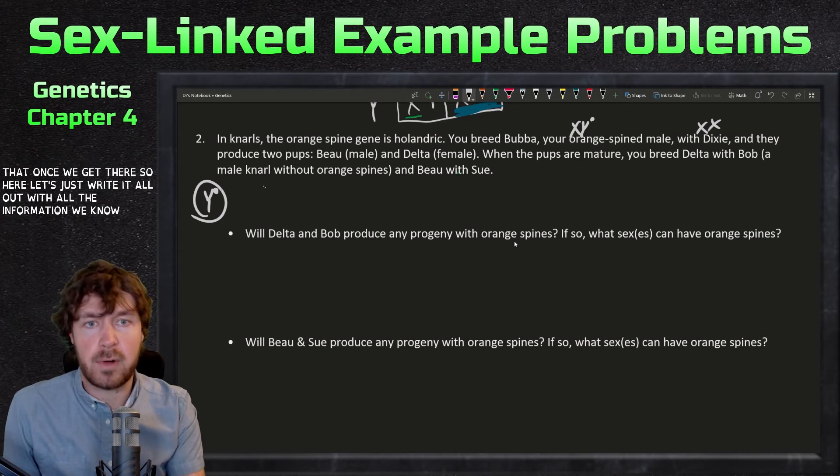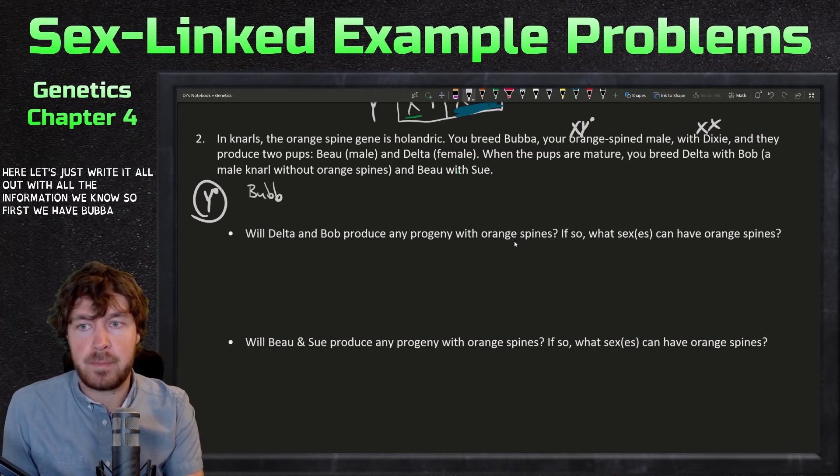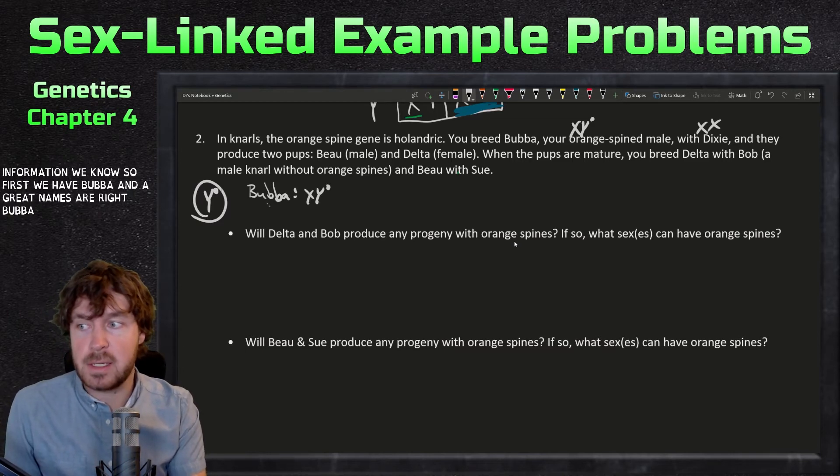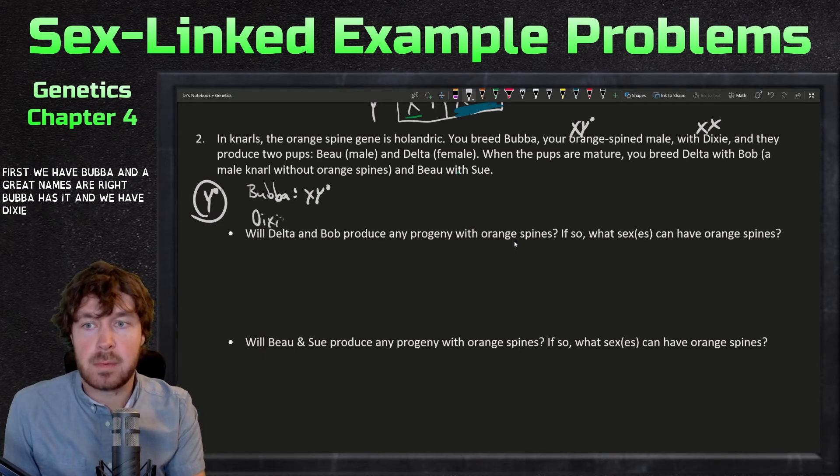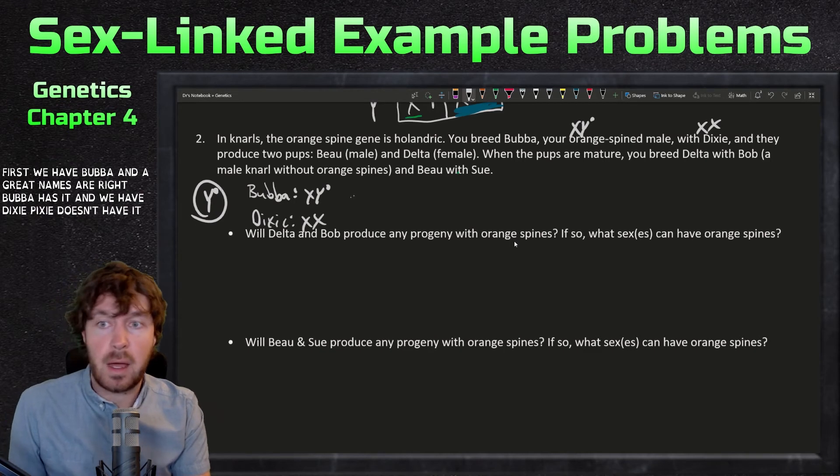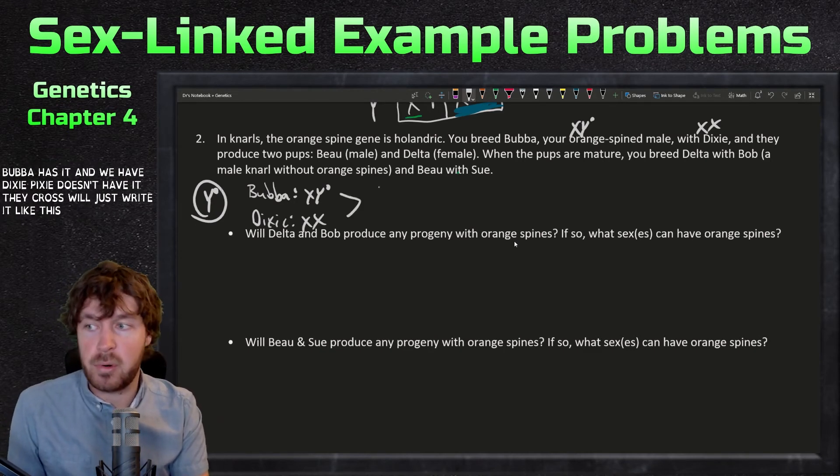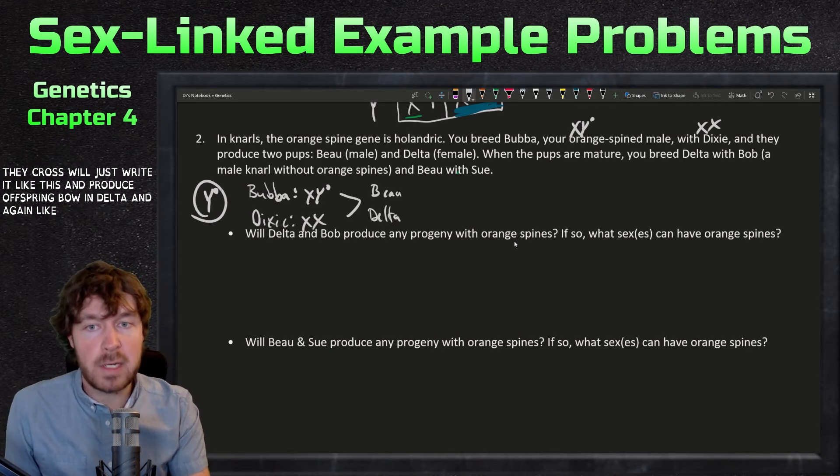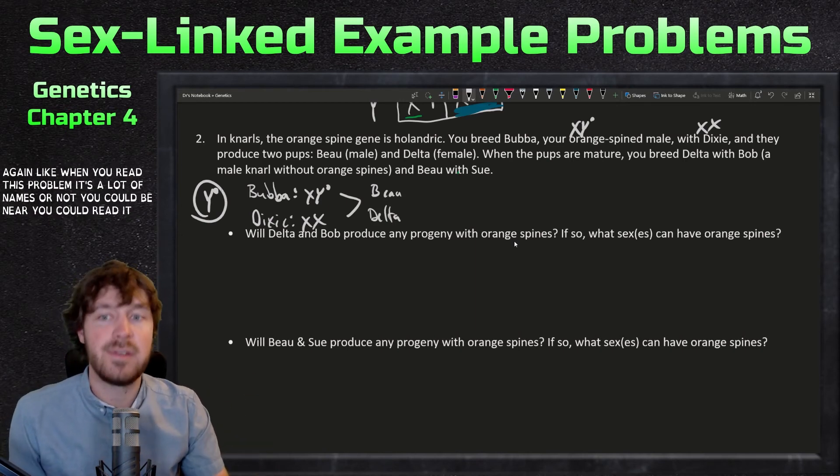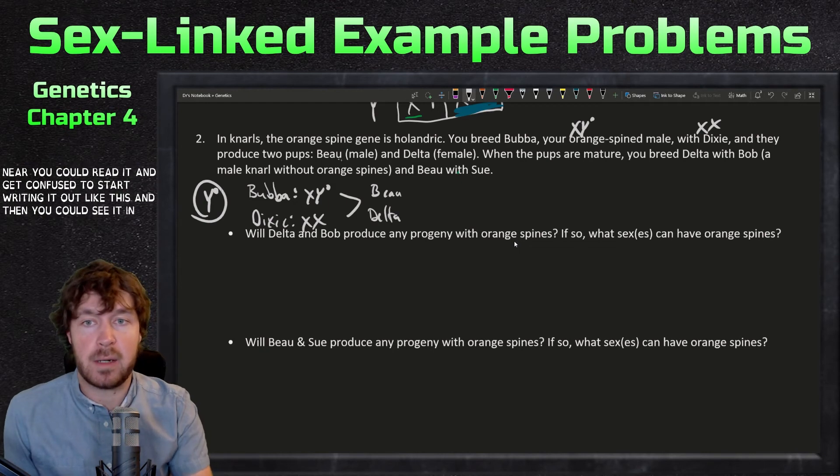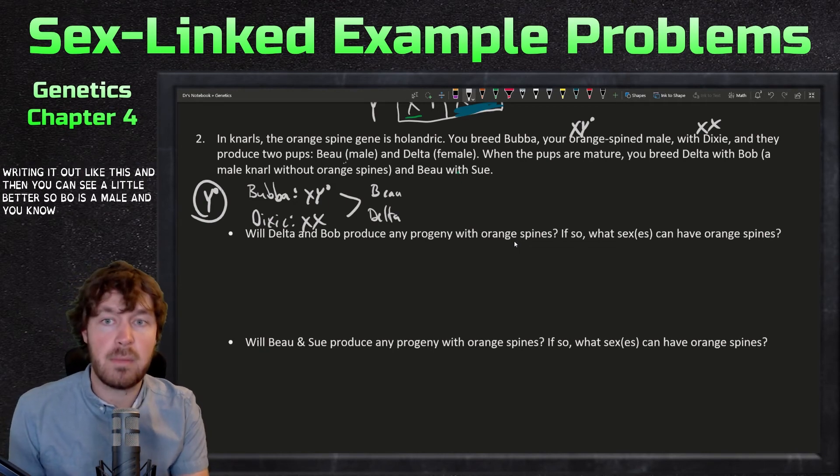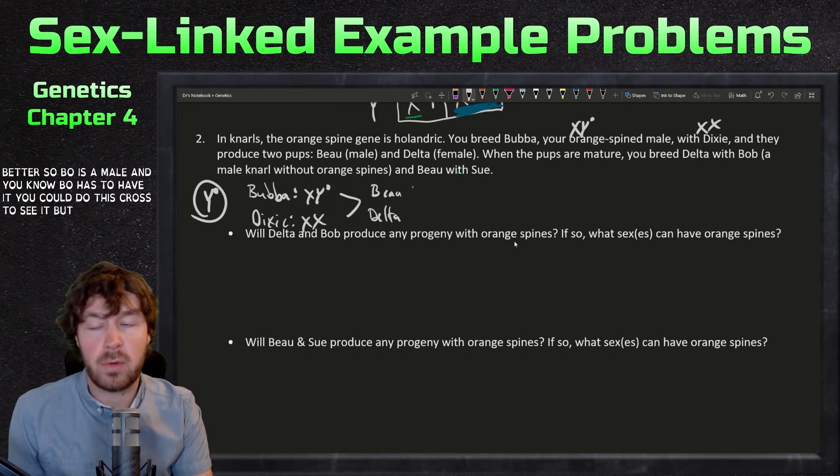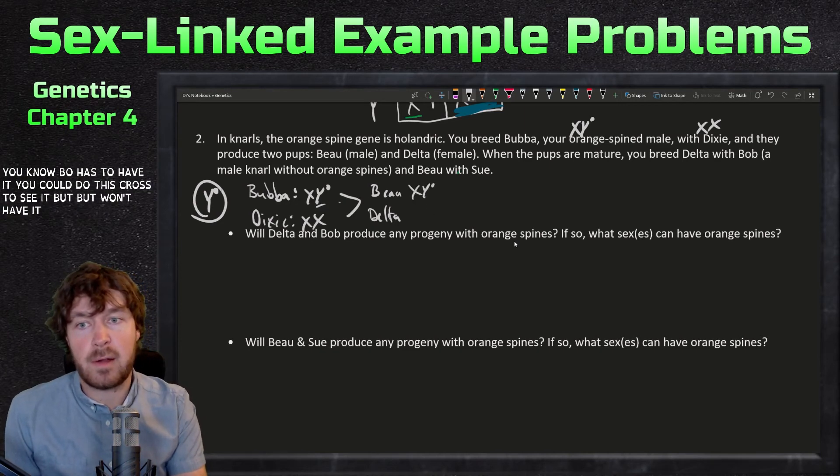When the pups are mature, we then continue breeding them. Let's just write it all out with all the information we know. First we have Bubba, I know great names here right, Bubba has it and we have Dixie. Dixie doesn't have it. Cross, we'll just write it like this, and produce offspring Bo and Delta. When you read this problem, it's a lot of names thrown out. You could read it and get confused. Just start writing it out like this and then you can see it a little better. Bo is a male and Bo has to have it. You could do this cross to see it, but Bo will have it. If the father has it, the son has it. Delta is a female, doesn't matter.